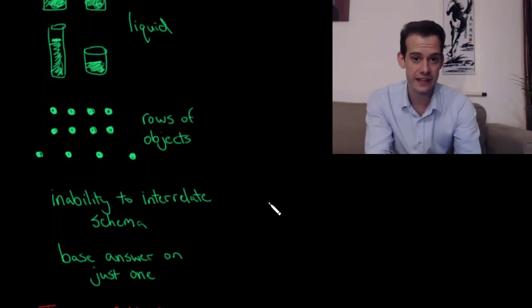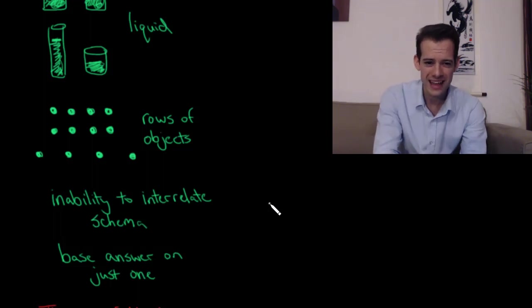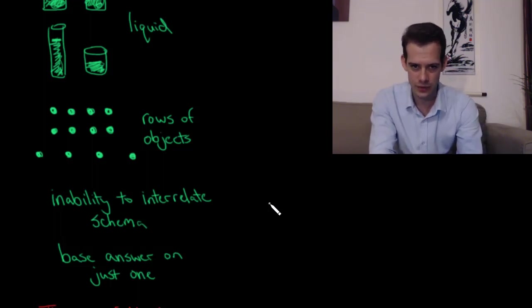For instance, in the case of the liquid in a glass, he thought children understand that the height matters in terms of how much liquid is in the glass and the width matters in terms of how much liquid is in the glass, but they don't really understand how these connect to each other.